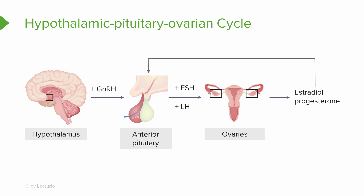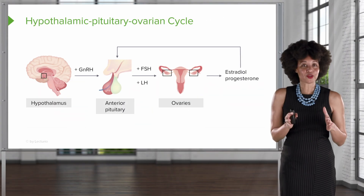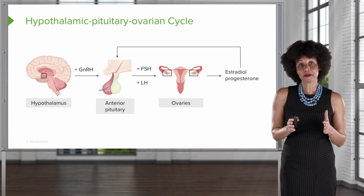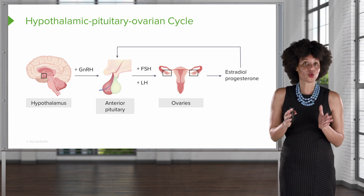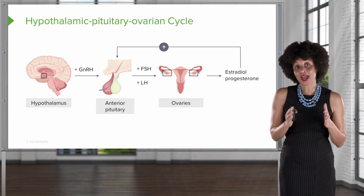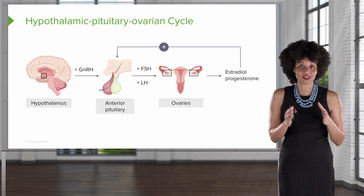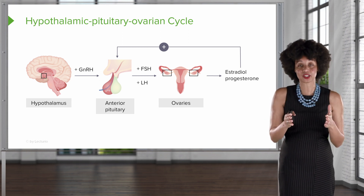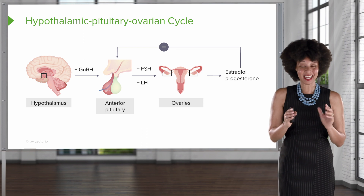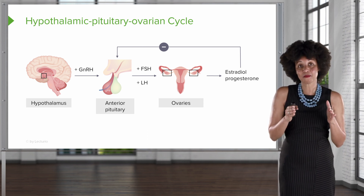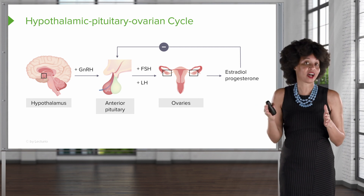The next thing we want to talk about in this cycle is the idea of a feedback loop. A feedback loop can be positive or negative. When we have a positive feedback loop, it means a substance being present elicits more of another substance to be produced. A negative feedback loop is exactly the opposite — when that substance is present, it sends a message to decrease production of another substance.